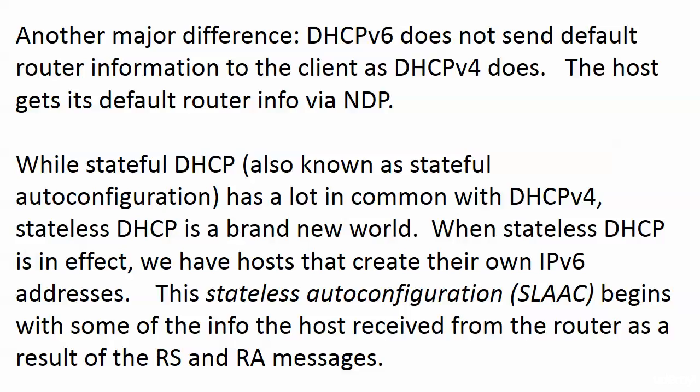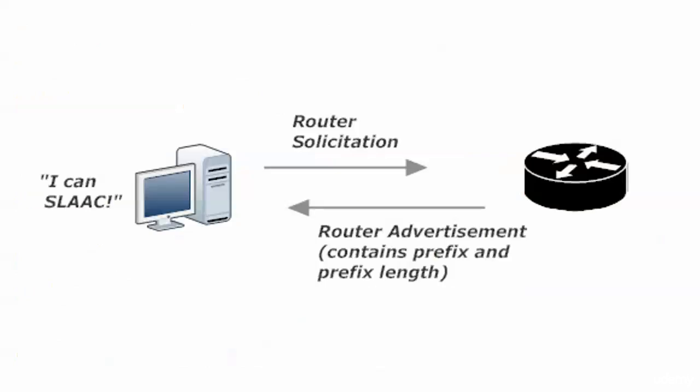Now let's talk about stateless DHCP. Stateful DHCP, also known as stateful auto-configuration, has a lot in common with DHCP version 4 — but stateless DHCP is a brand new world. When stateless DHCP is in effect, the hosts actually create their own IP version 6 addresses. This is called SLAAC — Stateless Address Auto-Configuration — and it begins with information the host received from the router via router solicitation and router advertisement messages.